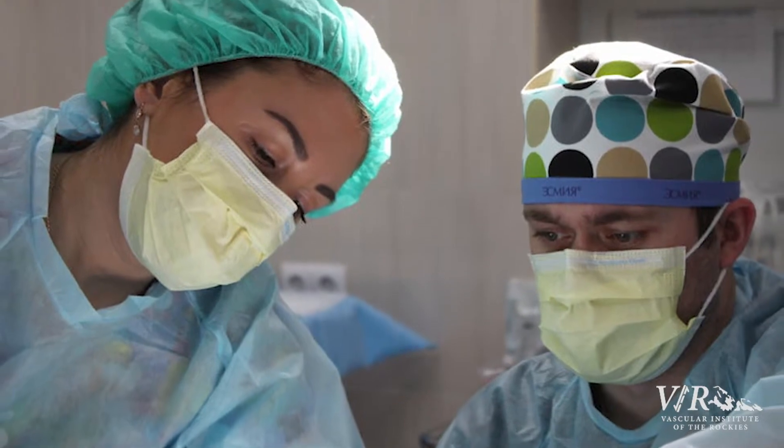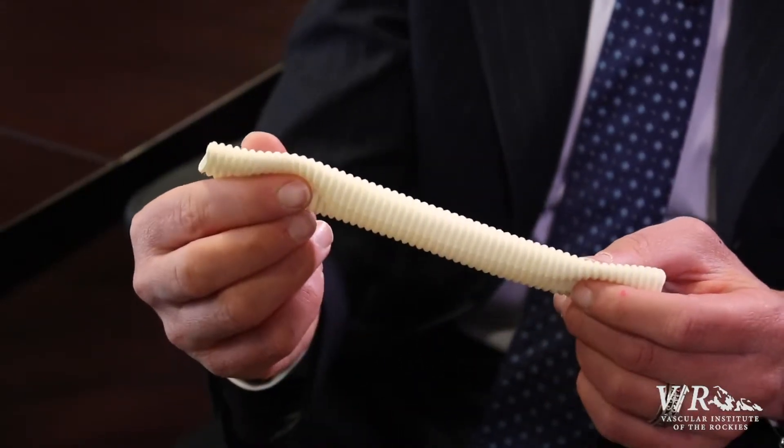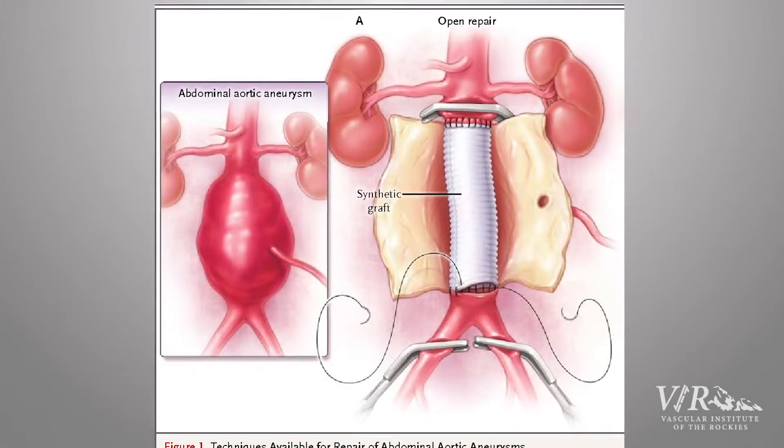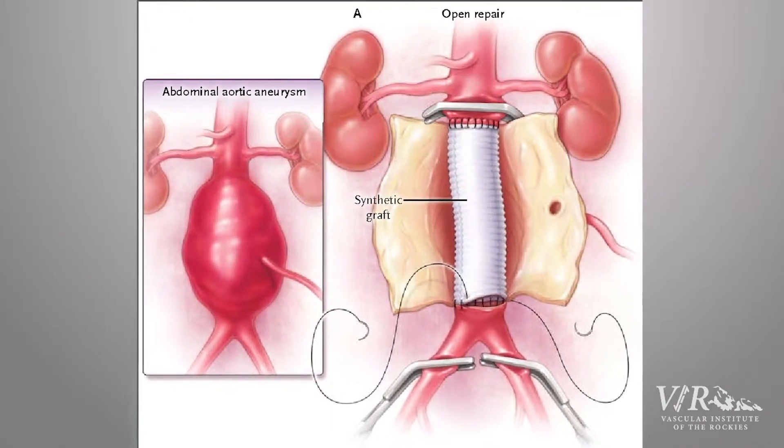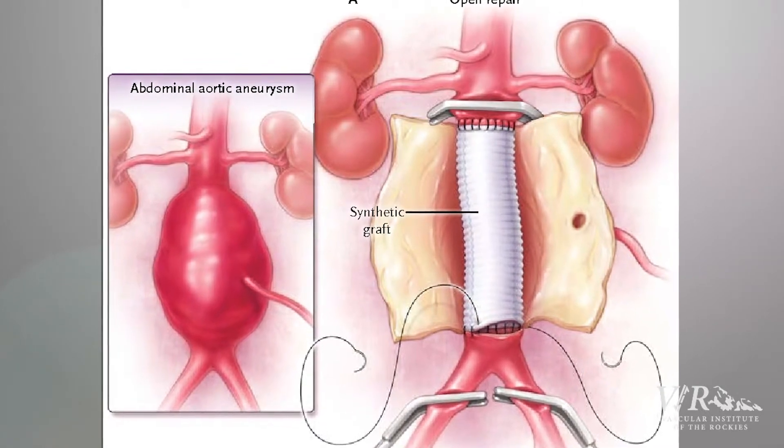At Vascular Institute of the Rockies, we have a full complement of ways to repair aortic aneurysms. The old way was to make either a lateral incision or an abdominal incision, get down to the aorta, and hand-sew a graft right into the aortic position. A person could end up in the hospital for seven to ten days, and it came with a whole set of complications.